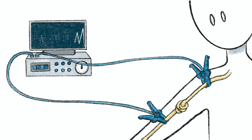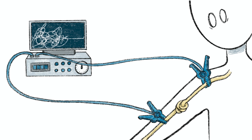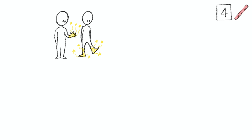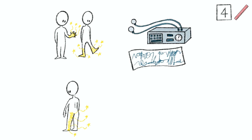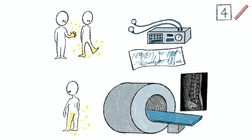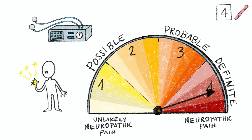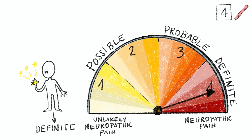Criterion 4 requires an objective diagnostic test to confirm the suspected lesion or disease of the somatosensory nervous system explaining the pain. In the case of carpal tunnel syndrome or diabetic neuropathy, this could be sensory nerve conduction studies. In the case of painful radiculopathy, this could be spinal imaging showing a nerve root compromise. If criterion 4 is fulfilled, patients are classified as having definite neuropathic pain. While a confirmatory diagnostic test can increase our level of certainty, these are not always indicated and not necessarily required to initiate targeted management.